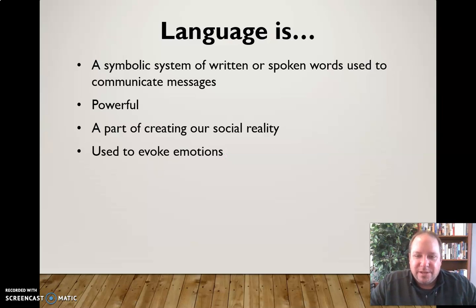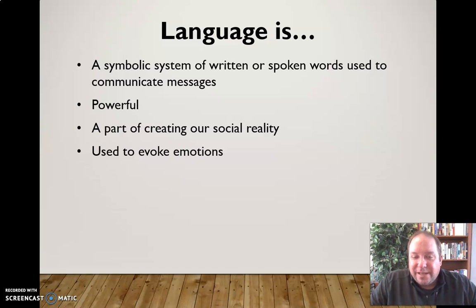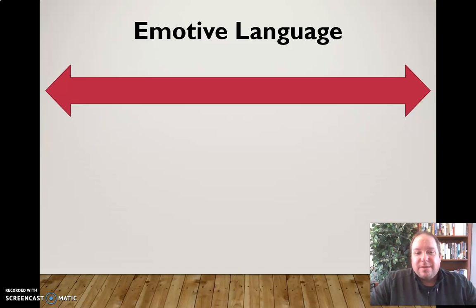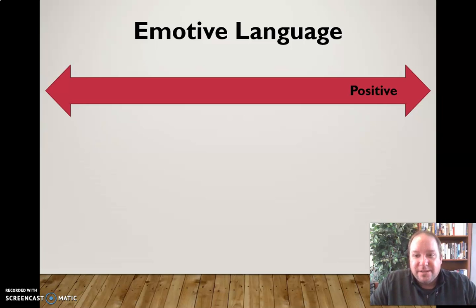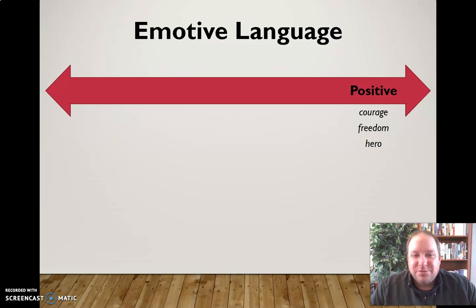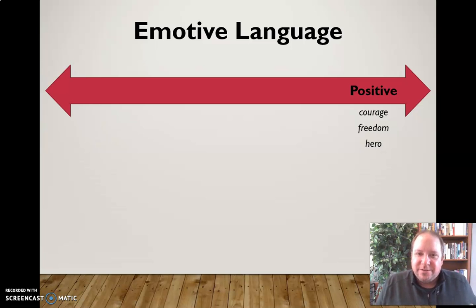Language is also used to evoke emotion, because every word has different connotative meanings — not defined by the word itself, but by how we feel about it. So language can bring out emotions and certain words trigger certain emotions. On the positive end of the spectrum, words like courage, freedom, and hero have a positive connotation. They bring good feelings. When we hear the word freedom, it feels good. When we hear somebody's a hero, that's a very positive connotation.